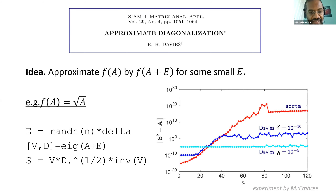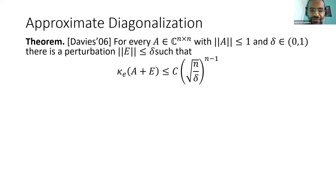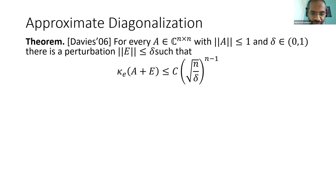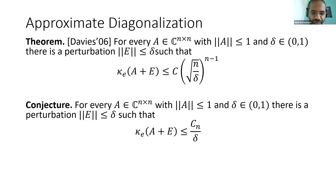This led Davies to prove a theorem: for any square matrix A with norm bounded by one and any parameter delta, there exists a perturbation of norm at most delta such that the eigenvector condition number of the perturbed matrix is bounded by a constant times sqrt(n) over delta to the power n. This bound has exponential dependence on n and on delta, which is inconsistent with the linear dependence observed in the graph. Davies conjectured that the true bound should be inversely proportional to delta: for every A there exists a perturbation E of norm at most delta such that the eigenvector condition number of A+E is bounded by some function of n over delta.